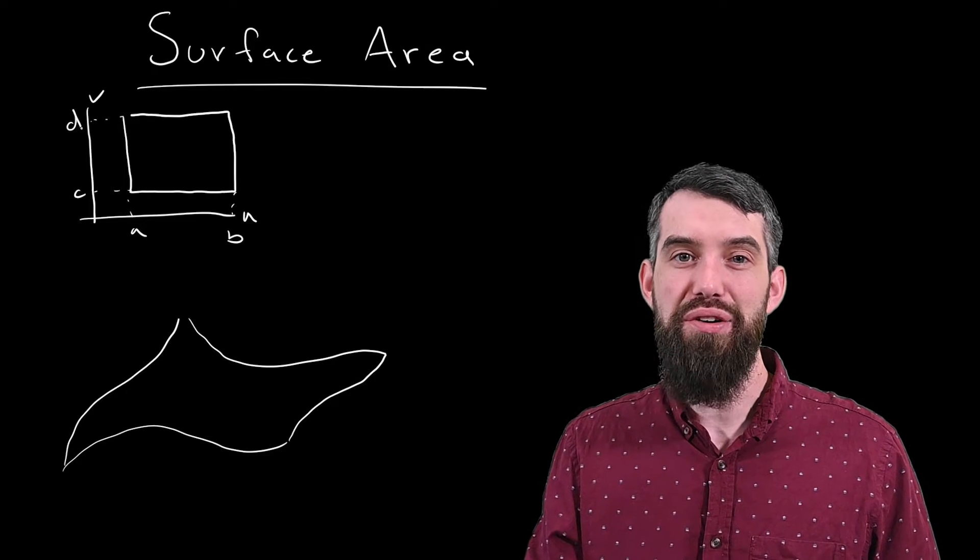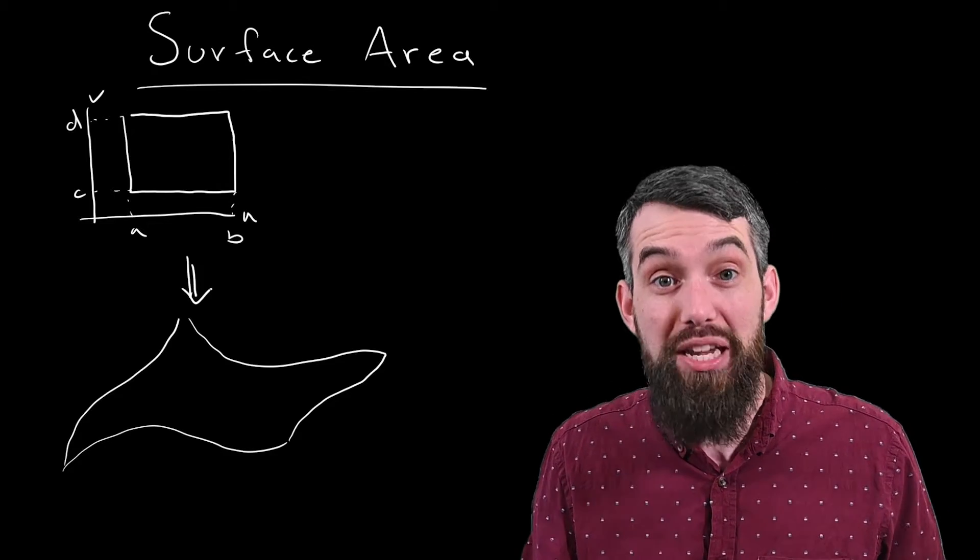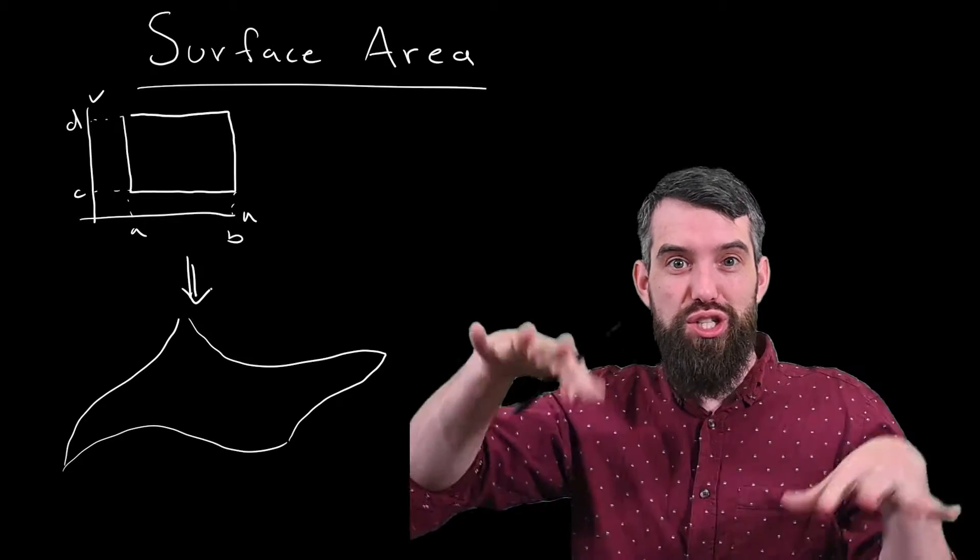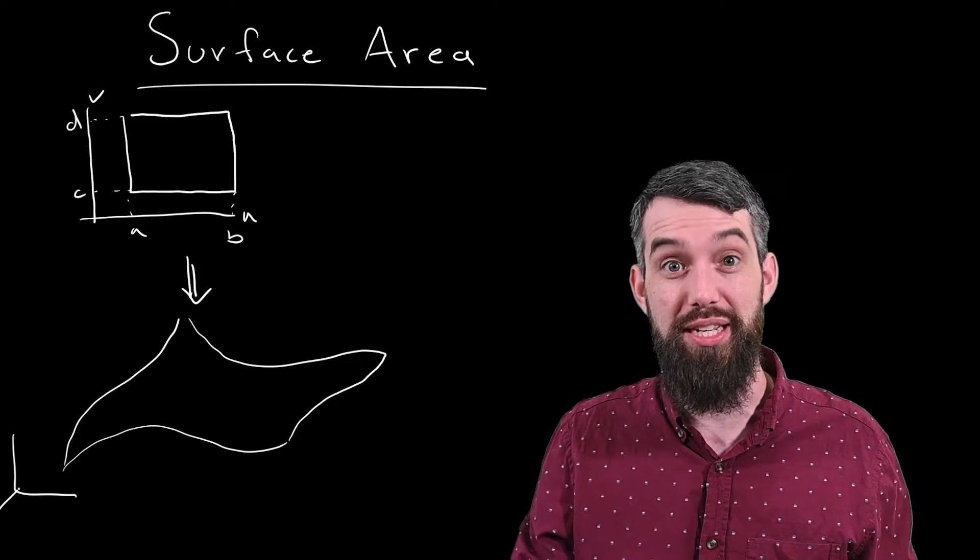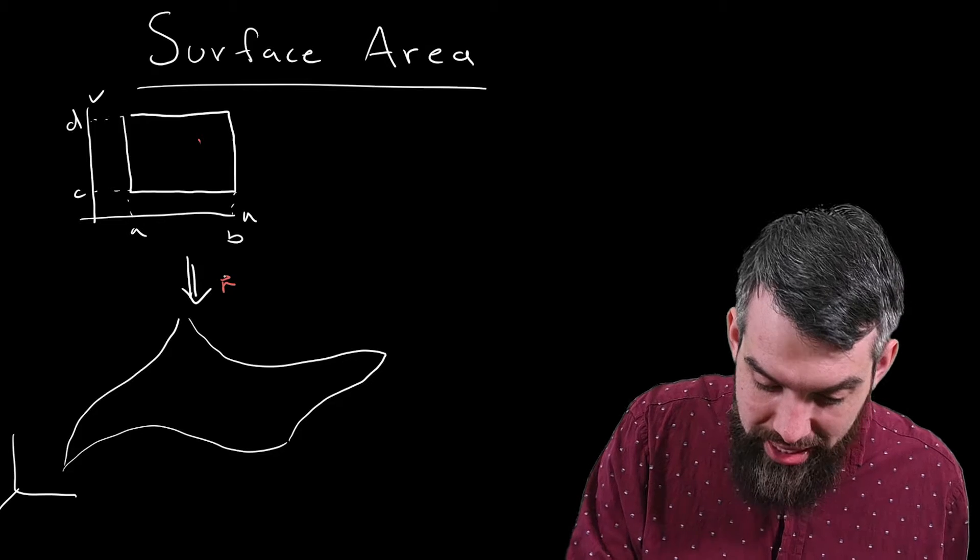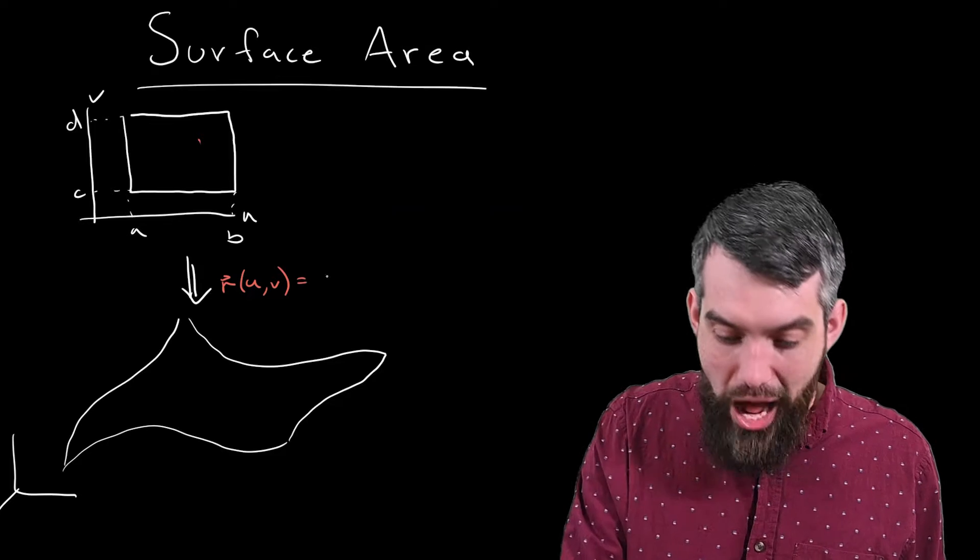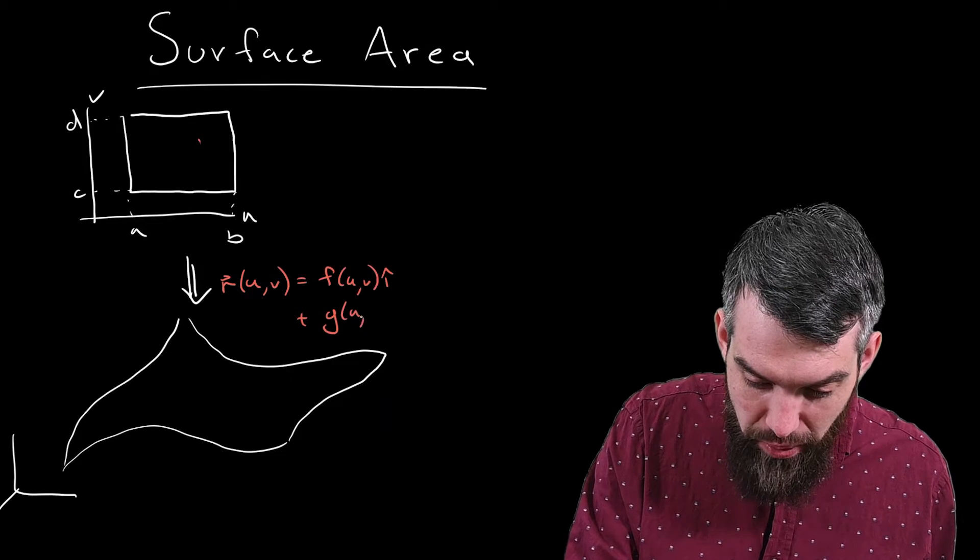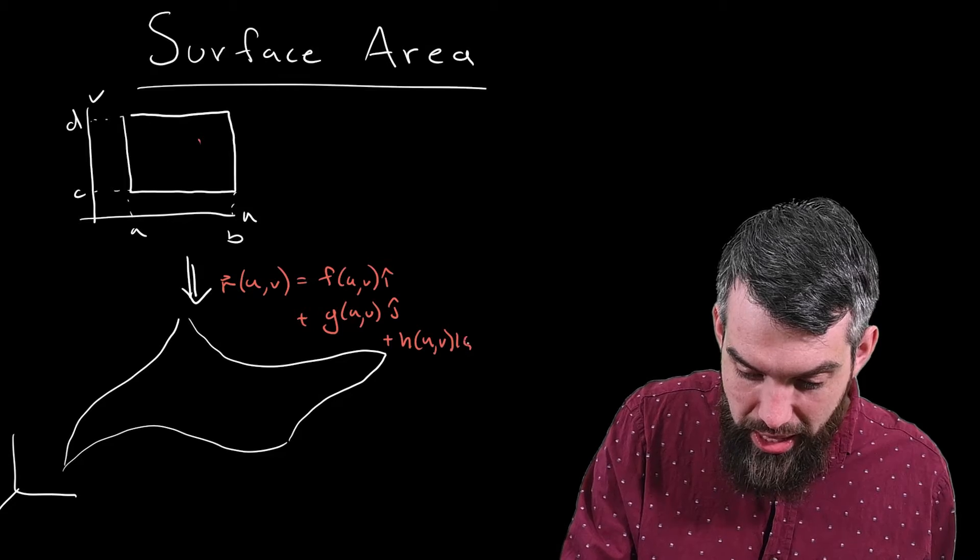And the idea of a parametrization is that there is some map, some transformation of the two-dimensional region in the U-V plane to this larger squiggly surface that I have, this surface that, for example, might live in three dimensions in some way. And then the way we would often write this down is that your parametrization R would be a function of U and V, and it would output some function F(U,V) in the i-hat, G(U,V) in the j-hat, and H(U,V) in the k-hat.